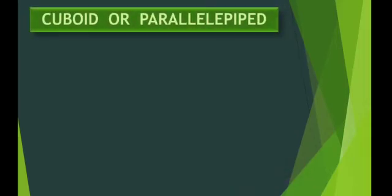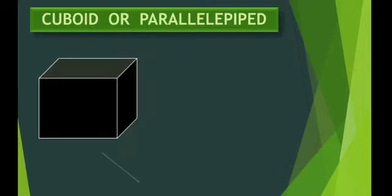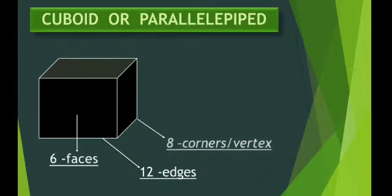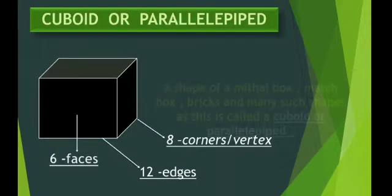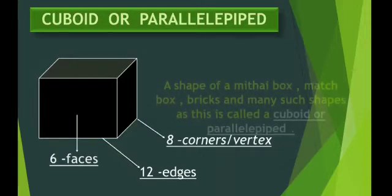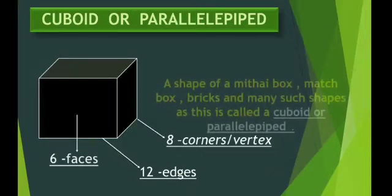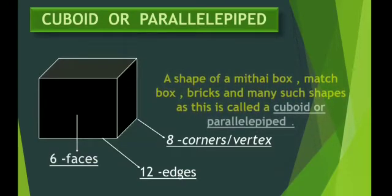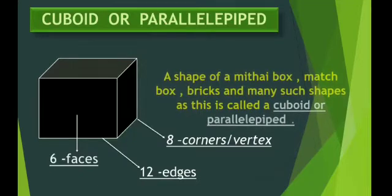A cuboid. Another word for cuboid is parallelepiped or cube. Now a cuboid has 12 edges, 6 faces, and 8 corners or vertex. A shape of a matchbox, bricks, and many such shapes as this is called a cuboid or parallelepiped or we can say a cube.